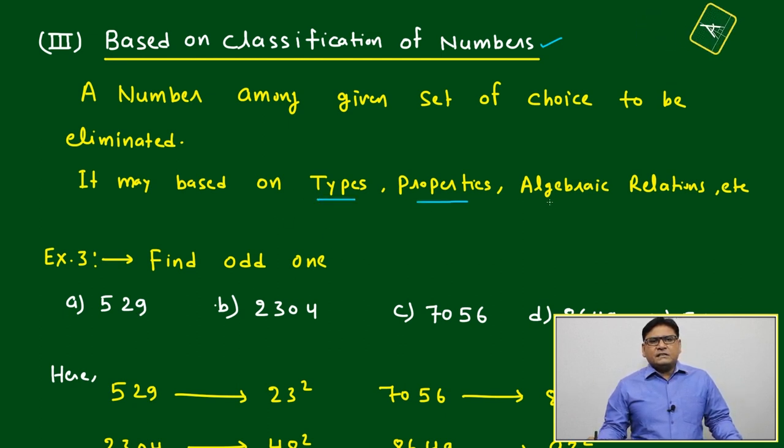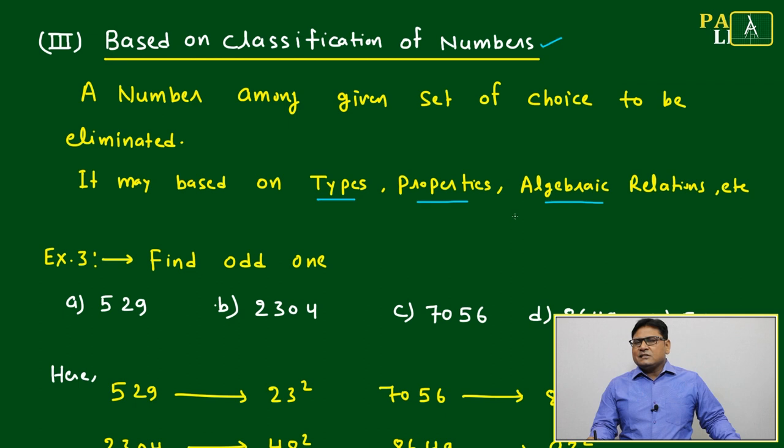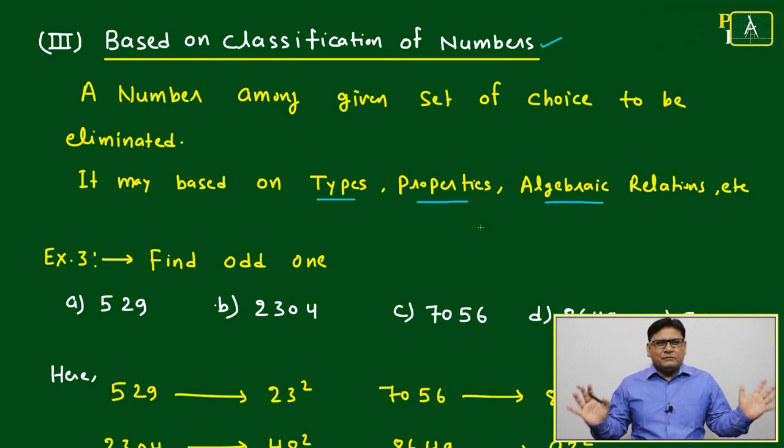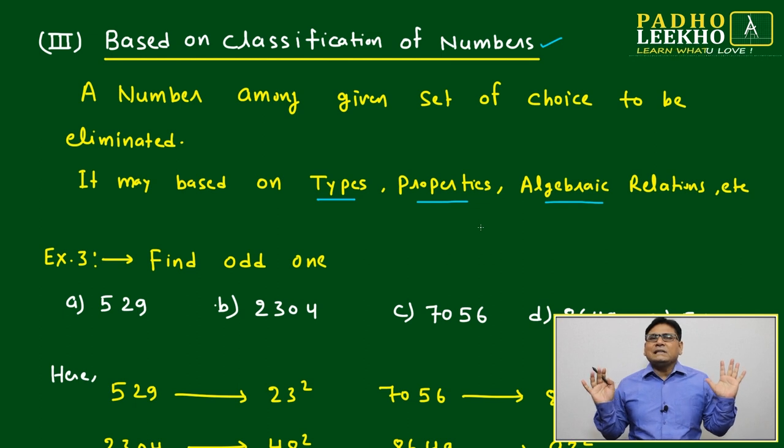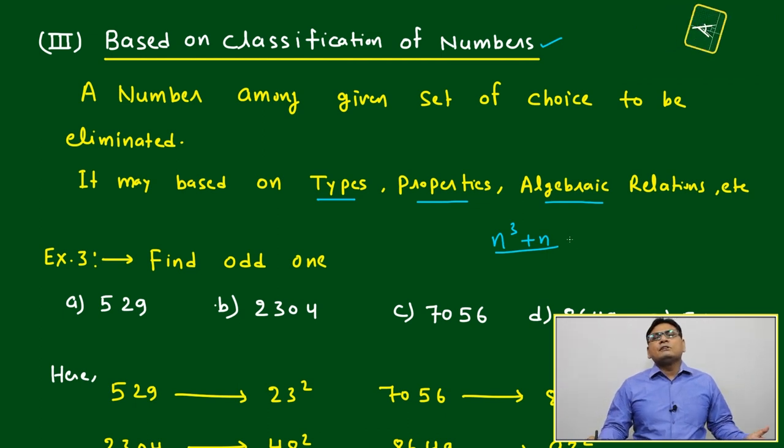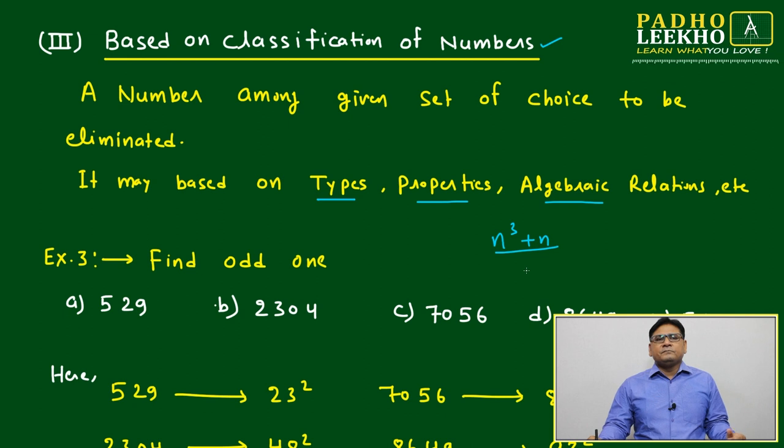It may be based on the types, properties, algebraic relations, arithmetic relations, or multiple type of number properties. It can be infinite type of multiple properties. Anything we can derive on properties. Numbers are related with n cube plus n, you can't do anything. You are able to predict, okay. If you are not able to predict, that is your problem.